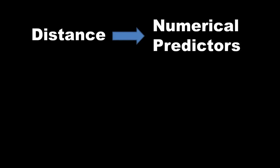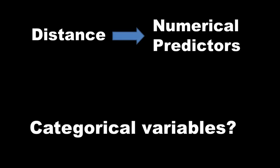Distance calculations obviously require numerical predictors. But what if some of your predictor variables are categorical? If you're thinking of using the K nearest neighbor technique but some or all of your predictor variables are categorical, it's difficult or impossible to directly calculate the distance. So we need some way to handle that.